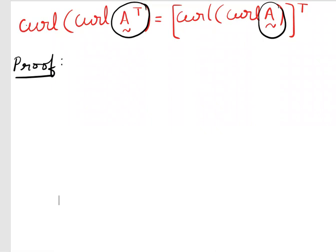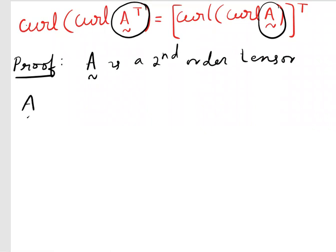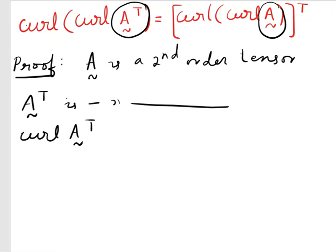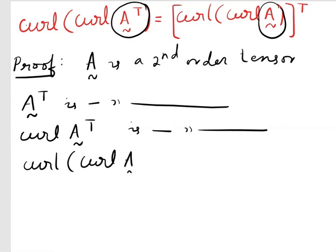Let us start using index notation. What is A? A is a second order tensor. Whenever A is a second order tensor, A transpose is also a second order tensor. What is curl of A transpose? Curl of A transpose is also a second order tensor, and curl of curl A transpose is also a second order tensor. When we apply curl, the order of the tensor will not change.